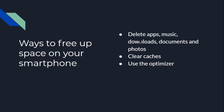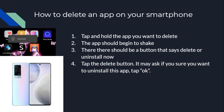Ways to free up space on your smartphone: you can delete apps, music, downloads, documents, and photos, clear caches, or use the optimizer. To delete an app, tap and hold on the app you want to delete — the app should begin to shake, so don't be alarmed, that's supposed to happen. Next, there should be a button that says Delete or Uninstall Now, and you click that. Once you click it, it may ask if you're sure you want to uninstall the app, and if you are, you just click OK.